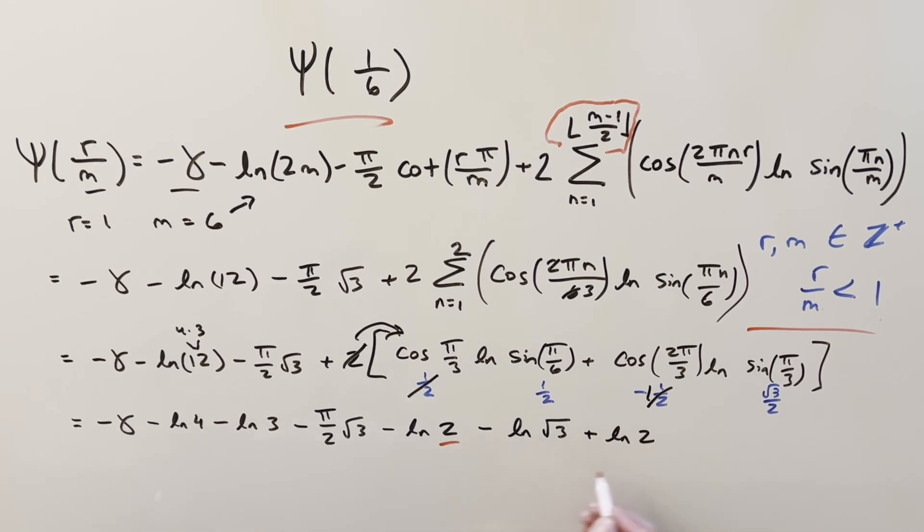And the reason I'm splitting it up like this, I'm just trying to get a common term. We have our terms that are going to be like ln 2 and our terms are going to be ln 3. You could do it a different way. Maybe you could get it, like leave it as ln 12. I don't know. I'm just trying to get kind of a compact solution to this.